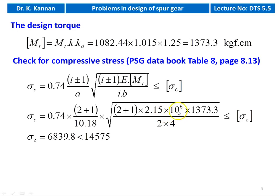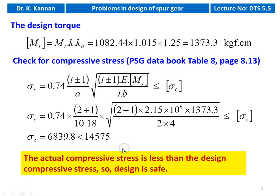Substituting: σc = 0.74 × (2 + 1) / 10.8 × √[3 × 2.15×10⁶ × 1,373.3 / (2 × 4)] = 6,839.8 kgf/cm², which is less than the design compressive stress of 14,575 kgf/cm². The design is safe.